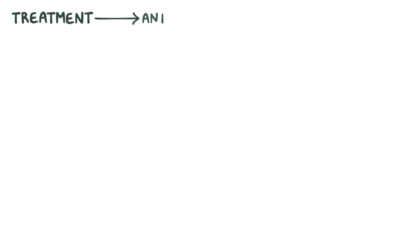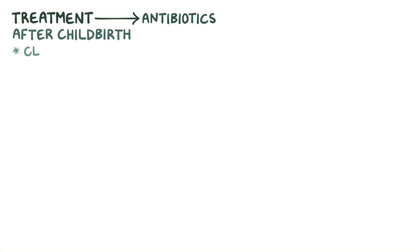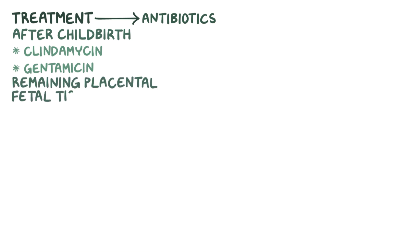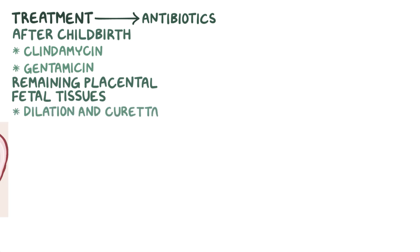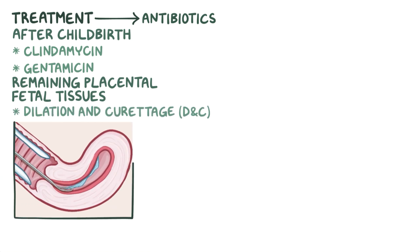Treatment of endometritis involves the use of antibiotics. For endometritis that occurs after childbirth, a combination of clindamycin and gentamicin is used. If endometritis is caused by remaining placental or fetal tissues, a procedure called dilation and curettage, or D&C, is done, where the cervix is dilated and the remaining tissues are removed by a curette.